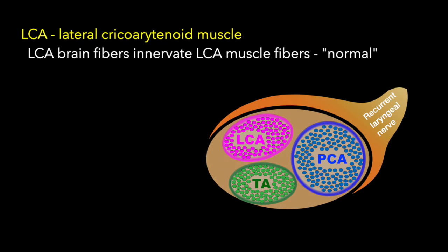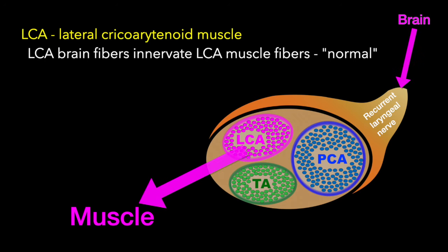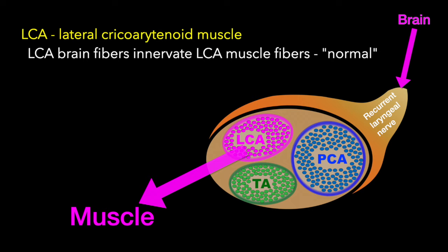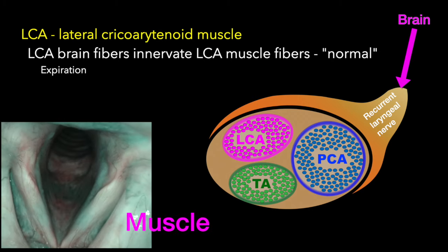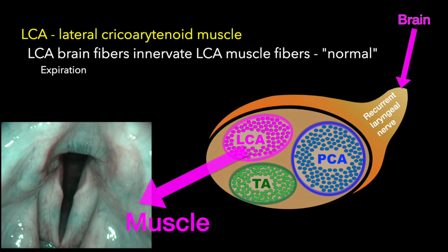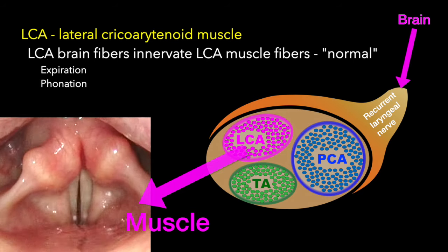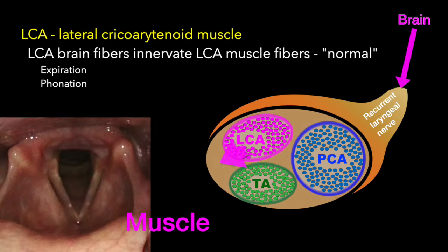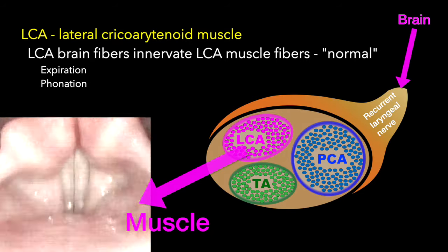So we can imagine there's an area in the brain that activates the lateral cricoarytenoid muscle. These LCA brain fibers innervate the actual LCA muscle. We would call this normal functioning if firing in the LCA center in the brain makes the LCA muscle move. And that typically occurs during expiration, which we've just watched, and it occurs during phonation - anytime you want to narrow or close the glottis, the LCA part of the brain will fire.